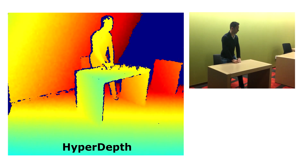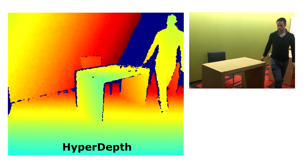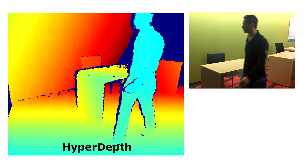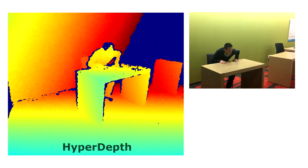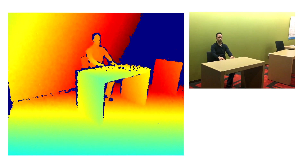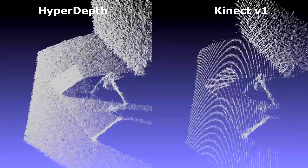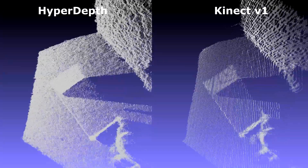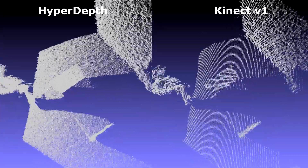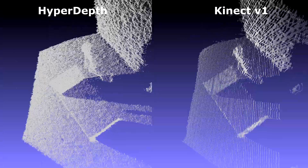Another example is shown here. Notice the range at which our camera can operate. A comparison with the Kinect V1 shows heavy quantization effects in the V1 Kinect camera. Because we can regress a smoother depth, our algorithm produces much higher quality results.